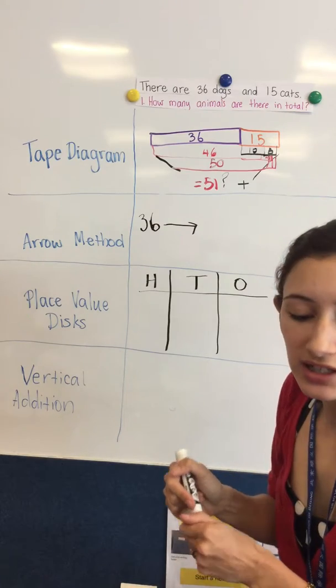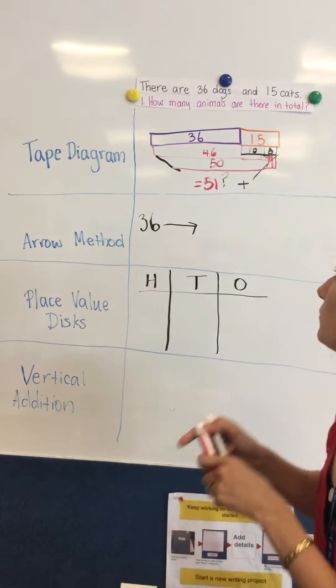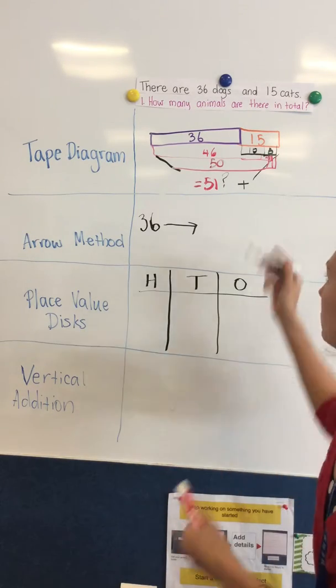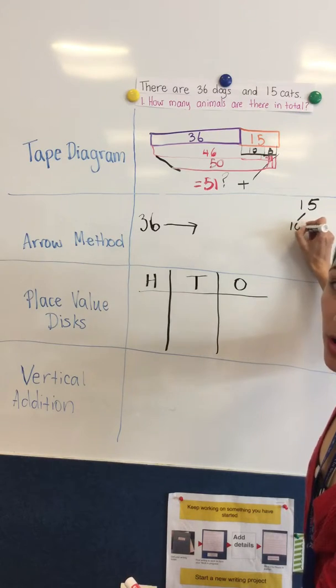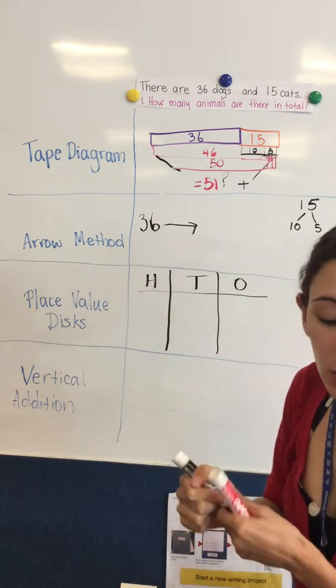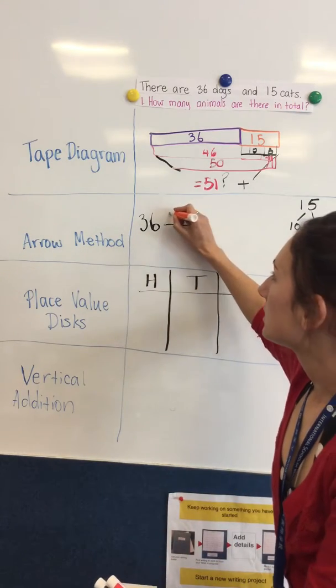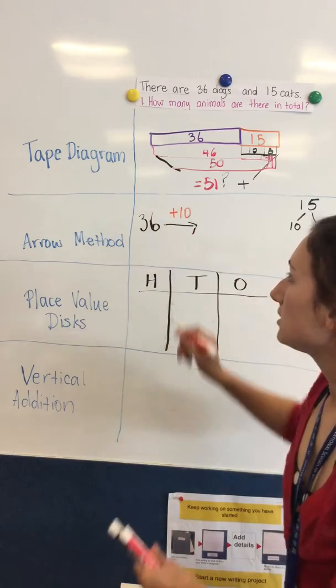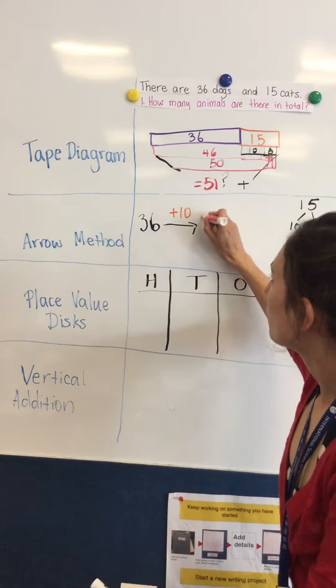And then it's really just about adding one piece of the number at a time. So we know that 15 is made up of 10 and 5, and I can show that in a number bond. So with the arrow method I just add on one piece of that at a time. So 36 plus 10 equals 46.